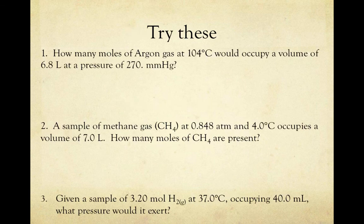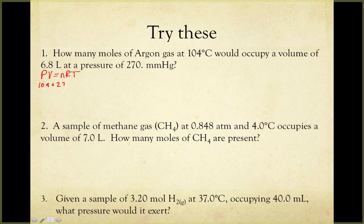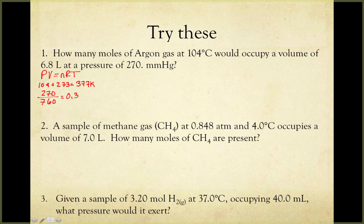Here's a sample problem. The first question asks: how many moles of argon gas at 104 degrees Celsius would occupy a volume of 6.8 liters at a pressure of 270 millimeters of mercury? This is an ideal gas law question because it asks about moles and gives us pressure, volume, and temperature. Starting with PV = nRT, I convert temperature to Kelvin: 104 + 273 = 377 K. I also convert pressure from mmHg to ATM: 270 ÷ 760 = 0.355 ATM.